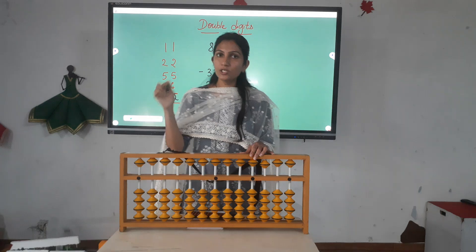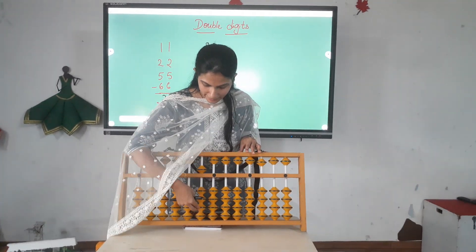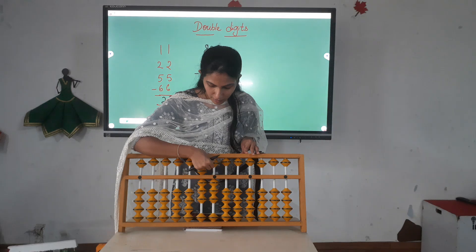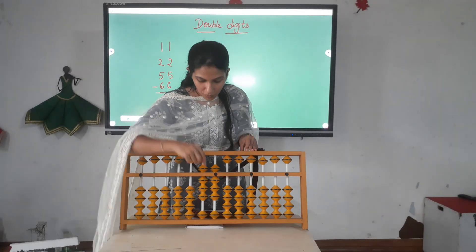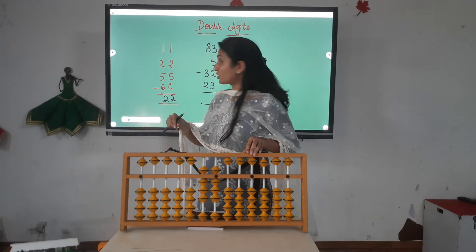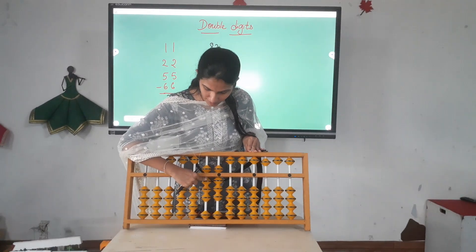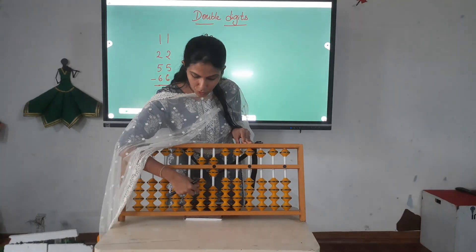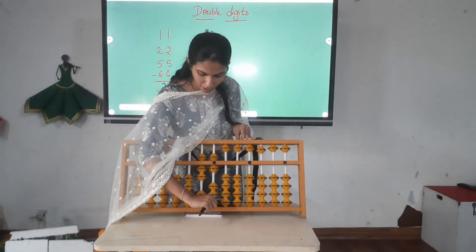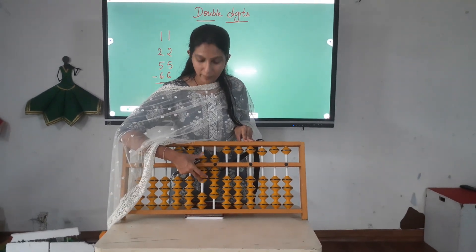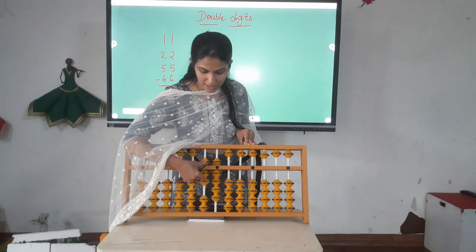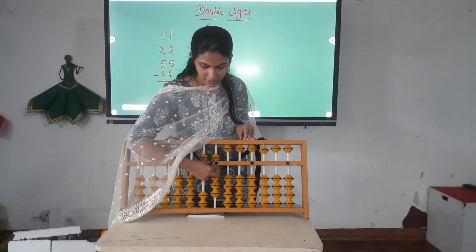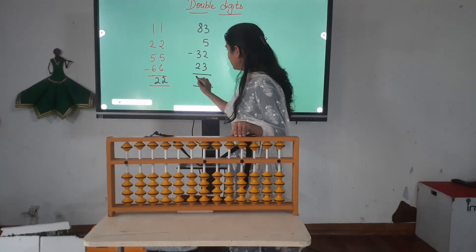Another example: 83. Since it is a double digit, you start from the 10's place — 8 and then 3, making 83. Then it is plus 5. Since it is a single digit, you add 5 in the 1's place. Then it is less 32, so you less 30 from here and less 2 from here. Then it is plus 23 — add 2 from the 10's place and 3 from the 1's place. Now the answer becomes 5, 6, 7 — so this is 70, and when all the beads touch the center bead, this represents 9. So this is 79. Set 0 and the answer is 79.